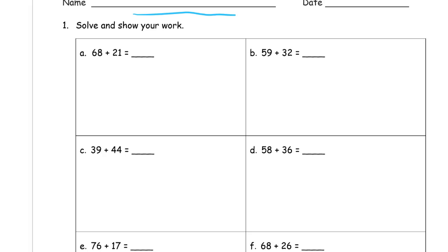As long as it works and you can show your work, then it's a good method. So here we have 68 plus 21. I'm usually looking at the ones digits to figure out which strategy is going to work the best. I see an 8 here, so I just want 2 more to get it up to the next 10.